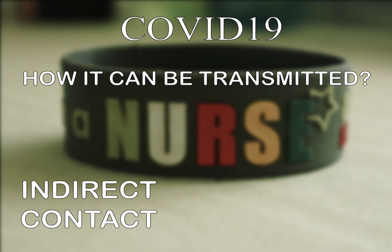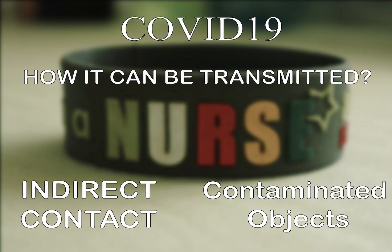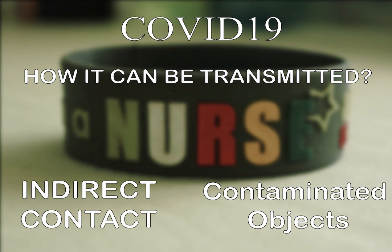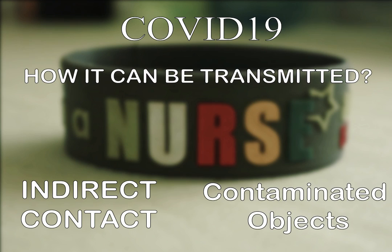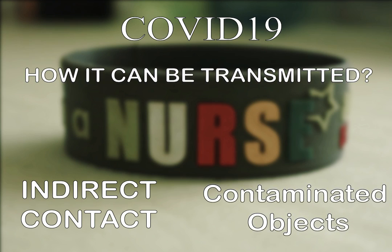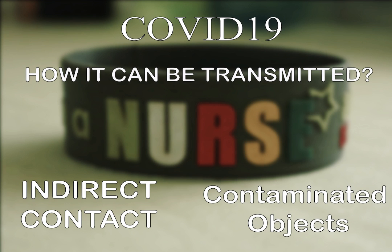Second is indirect contact. It is by touching or holding something that was contaminated by the virus. Most common examples are doorknobs, handrails, switch, or anything that can be touched in public places that is already contaminated by the infected person.